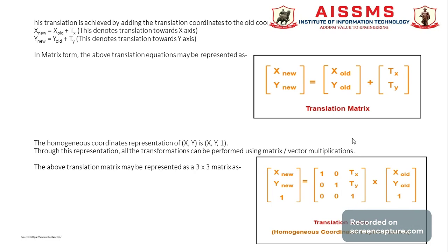Through homogeneous coordinate representation, all transformations can be performed using matrix or vector multiplication. The translation matrix in 3x3 form is: [x_new, y_new, 1] = [[1, 0, tx], [0, 1, ty], [0, 0, 1]] multiplied by [x_old, y_old, 1]. This is the homogeneous coordinate representation of the translation matrix.